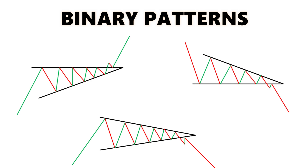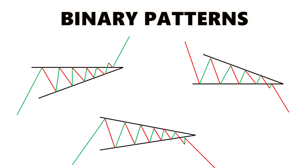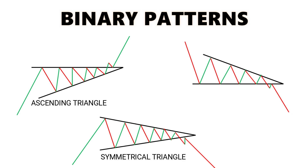The binary patterns — a binary pattern represents a period of consolidation after which the market may respond by driving prices in either direction. This could mean continuation of the preceding trend or lead to a reversal of that trend. Only once the pattern has been completed and a breakout occurs can the new trend be identified. In this group you'll find: symmetrical triangle, ascending triangle, and descending triangle.